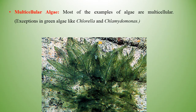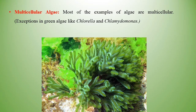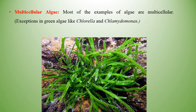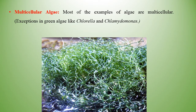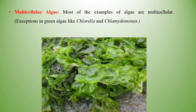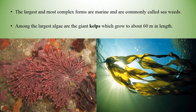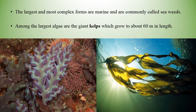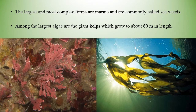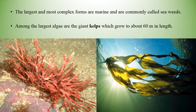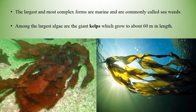Most of the examples of algae are multicellular. There are few exceptions in green algae, like Chlorella and Chlamydomonas. The largest and most complex forms of algae are marine algae, commonly called seaweeds. Among the largest algae are the chained kelps, which grow to about 60 meters in length.